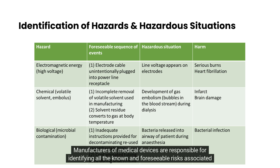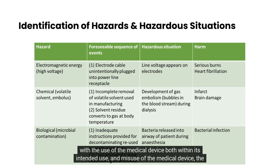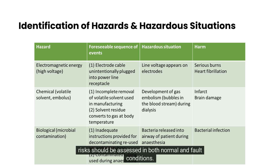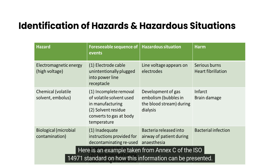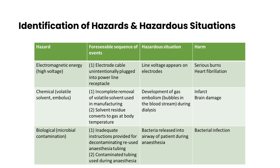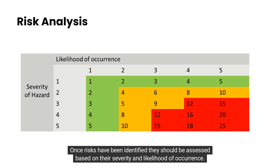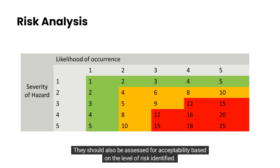Manufacturers of medical devices are responsible for identifying all the known and foreseeable risks associated with the use of the medical device, both within its intended use and misuse, and the risks should be assessed in both normal and fault conditions. Here is an example taken from Annex C of the ISO 14971 standard on how this information can be presented. Once risks have been identified, they should be assessed based on their severity and likelihood of occurrence, and also for acceptability based on the level of risk identified.